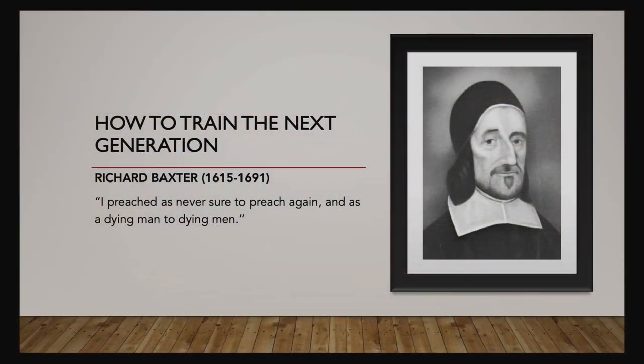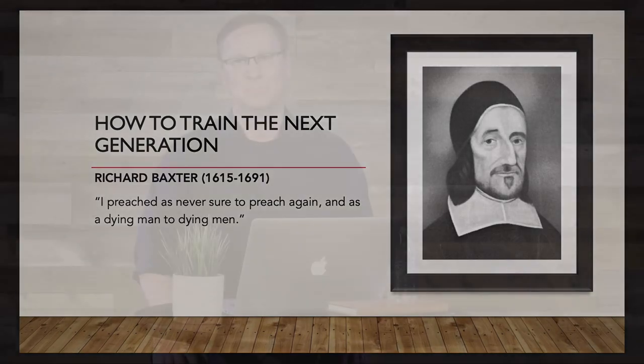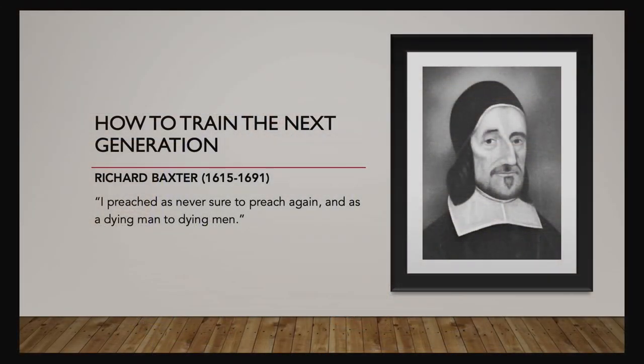Richard Baxter was a pastor in England during the time of the Puritan era. He was basically the pastor of a megachurch — he presided over a church in a town called Kidderminster, a church of about 2,000 people in that parish, most of which attended his church and most of which were saved under his ministry. Baxter teaches us how to train the next generation. He took the fathers of different houses and trained them how to be godly men and lead their own families spiritually. His passion was this: 'I preached as never sure to preach again and as a dying man to dying men.'